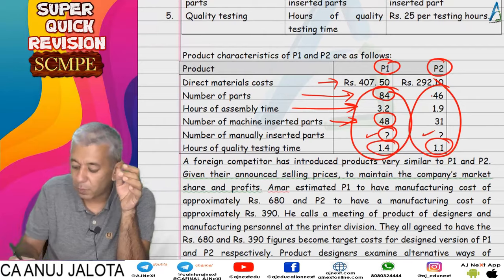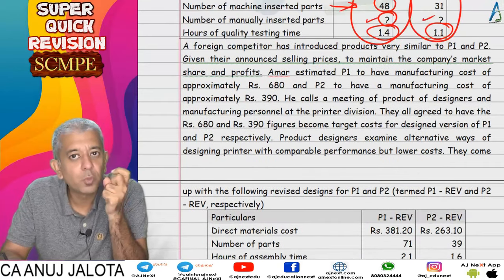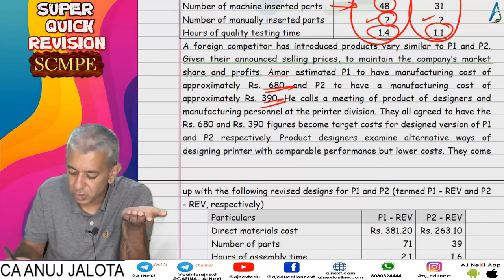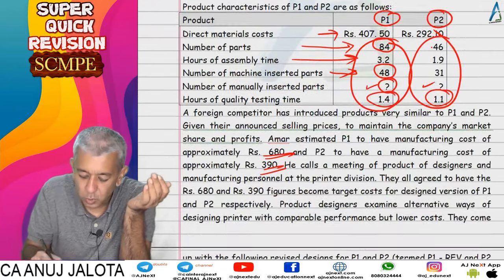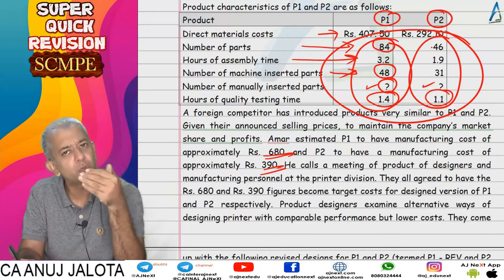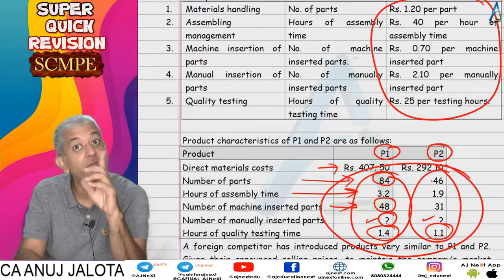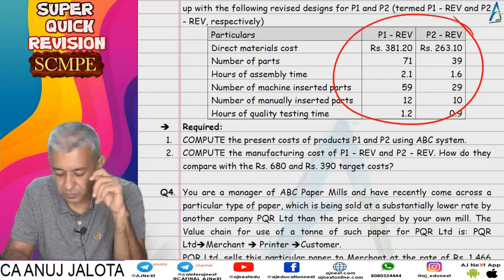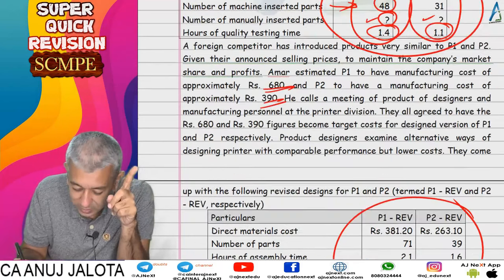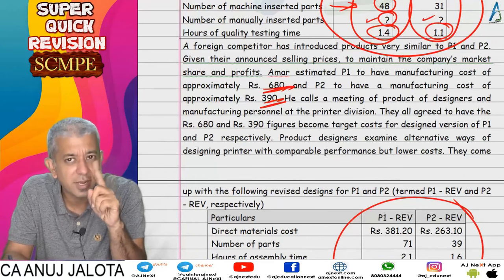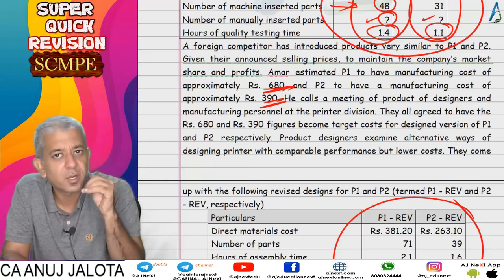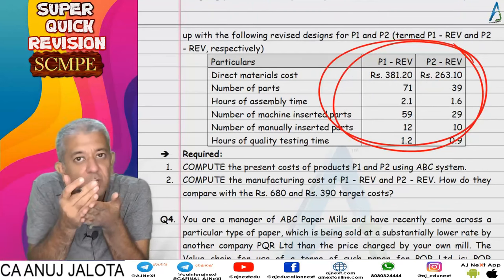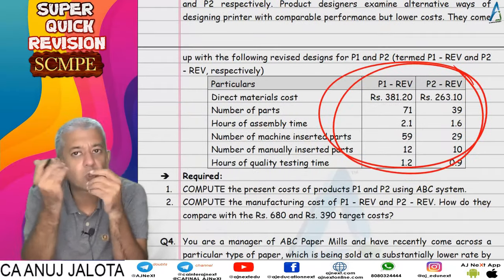After computing costs for P1 and P2, competition arrived again. We needed to reduce selling prices and implement a cost reduction scheme using new specifications. Cost per unit of cost driver remains the same unless stated otherwise. The new cost was calculated using new specifications and compared with target costs of 680 and 390. If our new costs are below 680 and 390 respectively, the cost reduction target is met; otherwise it is not.